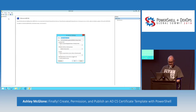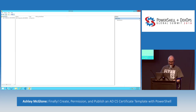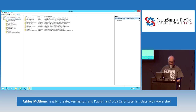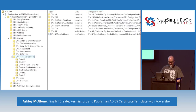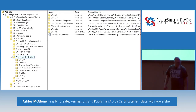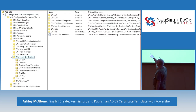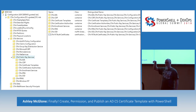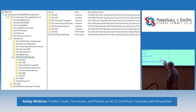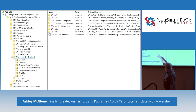In ADSI Edit, right-click, connect to the current domain, and in the middle pick Configuration — this is the forest-wide partition. Inside there is Services, and under Services is Public Key Services. This is where your templates live in Active Directory. We've got the OID — object identifier — enrollment services where the CAs live, and then certificate templates.